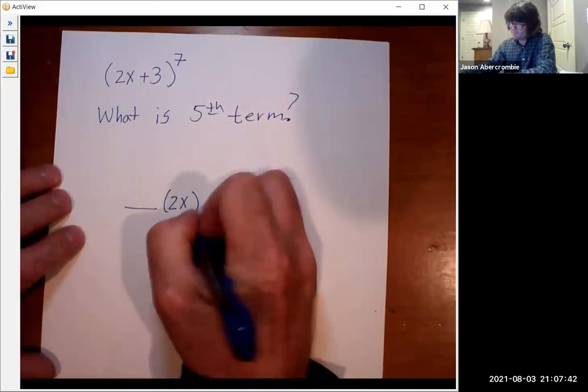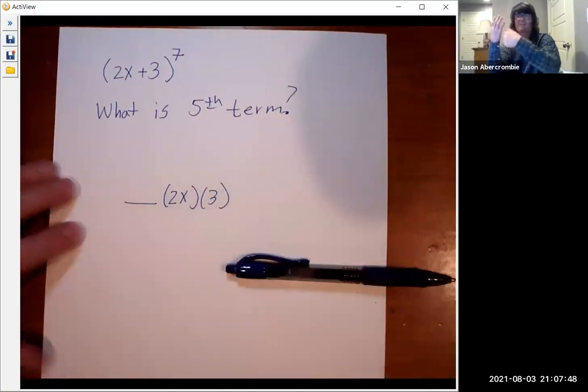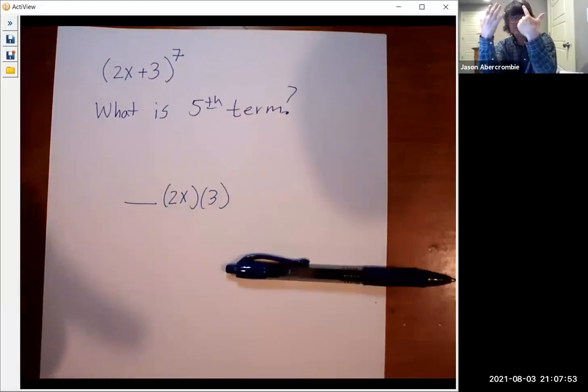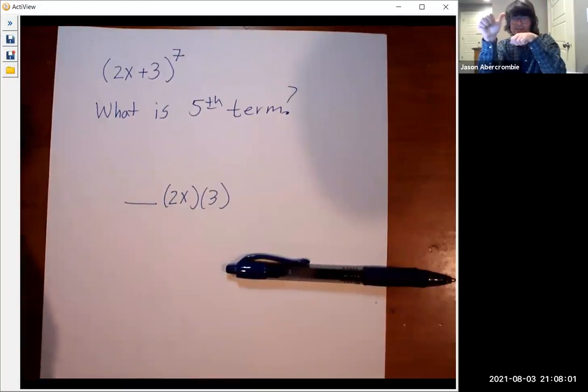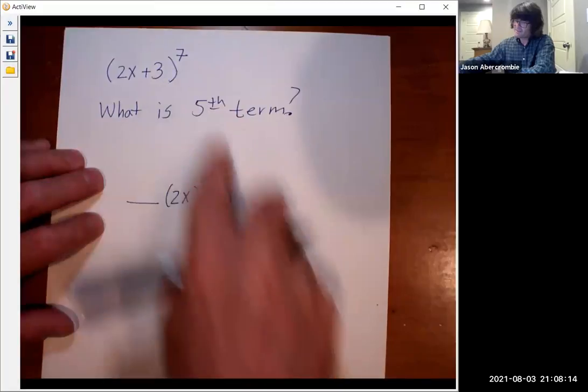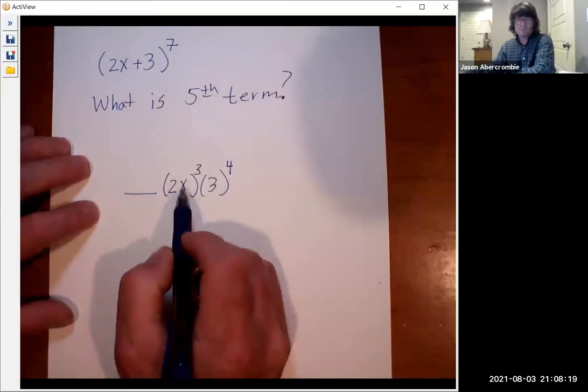2x to a power and 3 to a power. And if it's the fifth term, I know, just look at my fingers. We started out the first term had a seven on the front. The first term had a seven on the front. The second term had a six, then a five, then a four, then a three. So we know this is going to be a three. I'm counting down. And then because these have to add up to seven, that's going to be a four. So I know that's going to be how the back two pieces work.